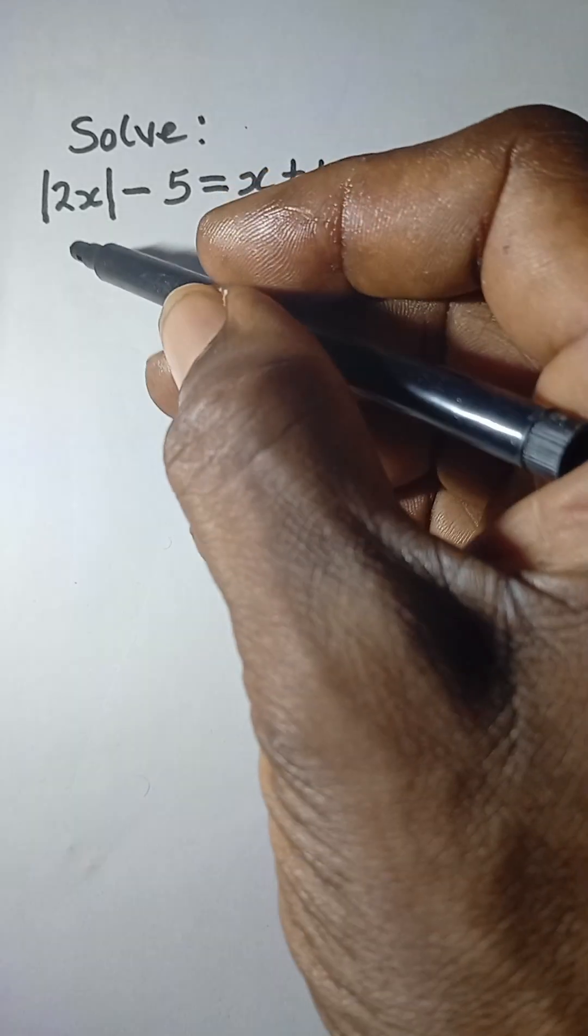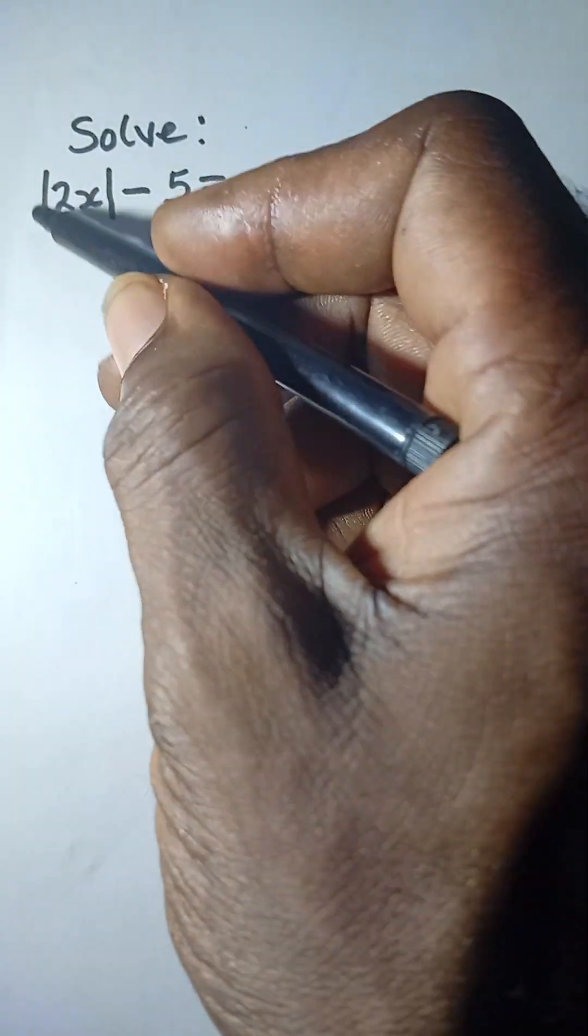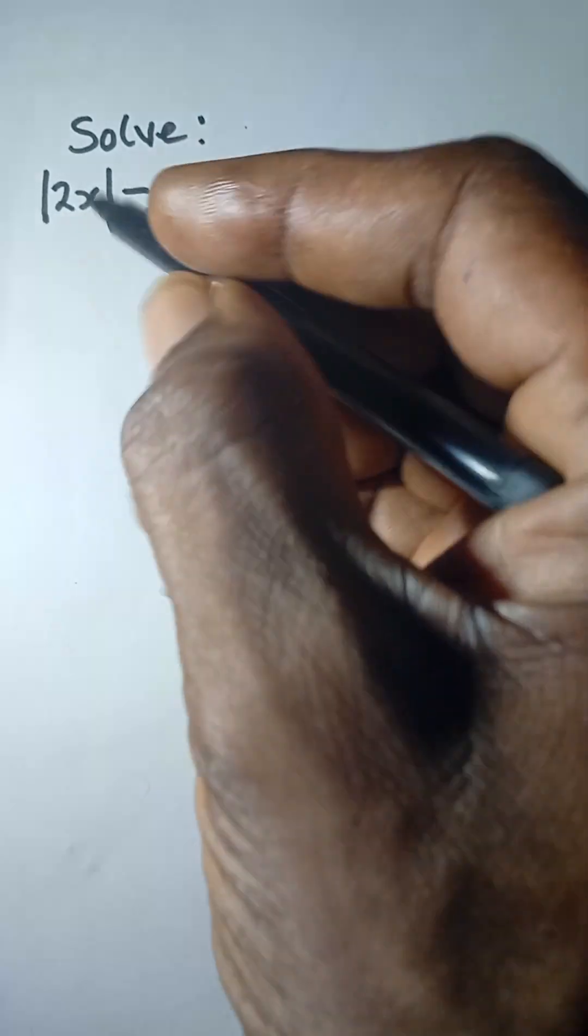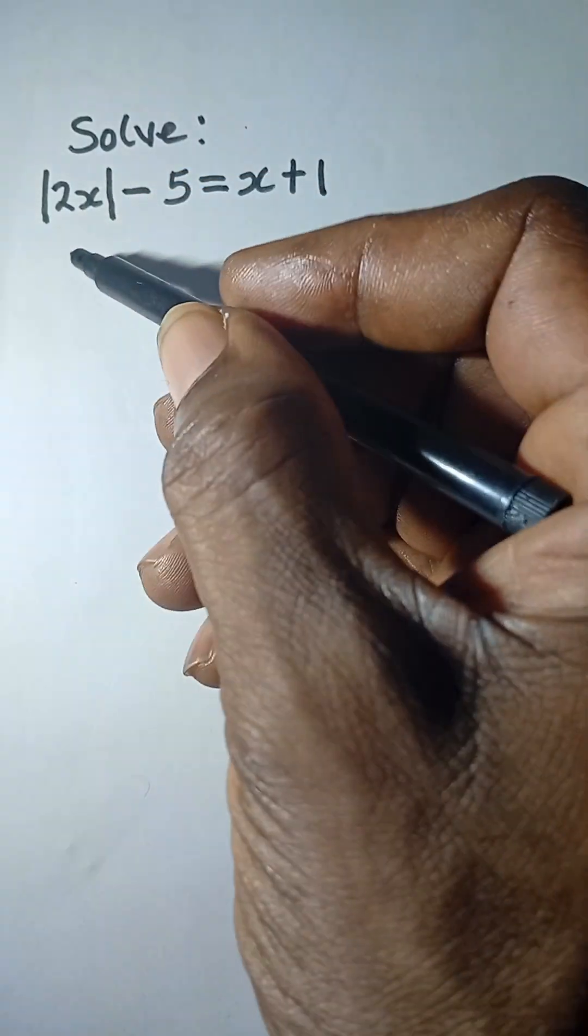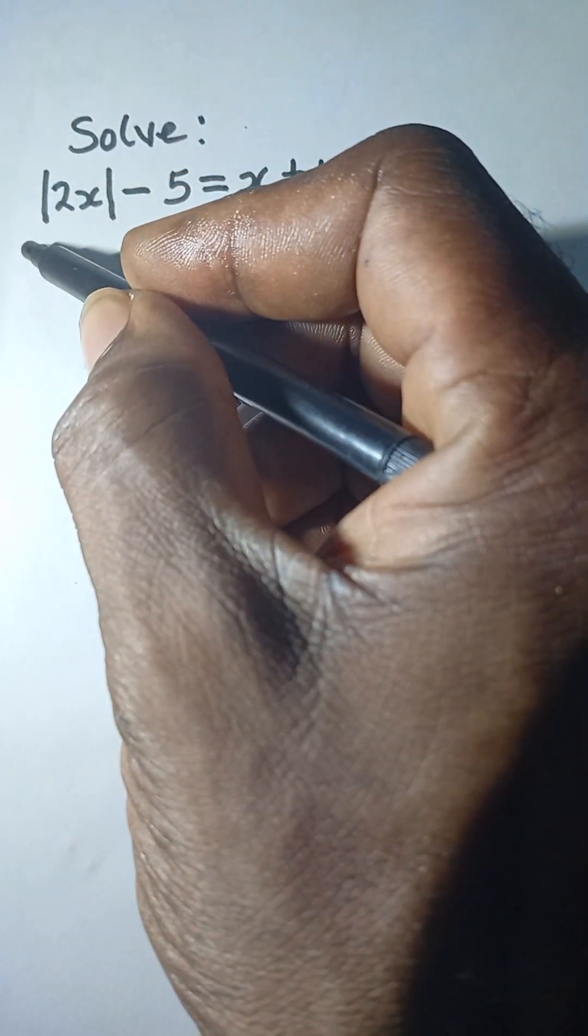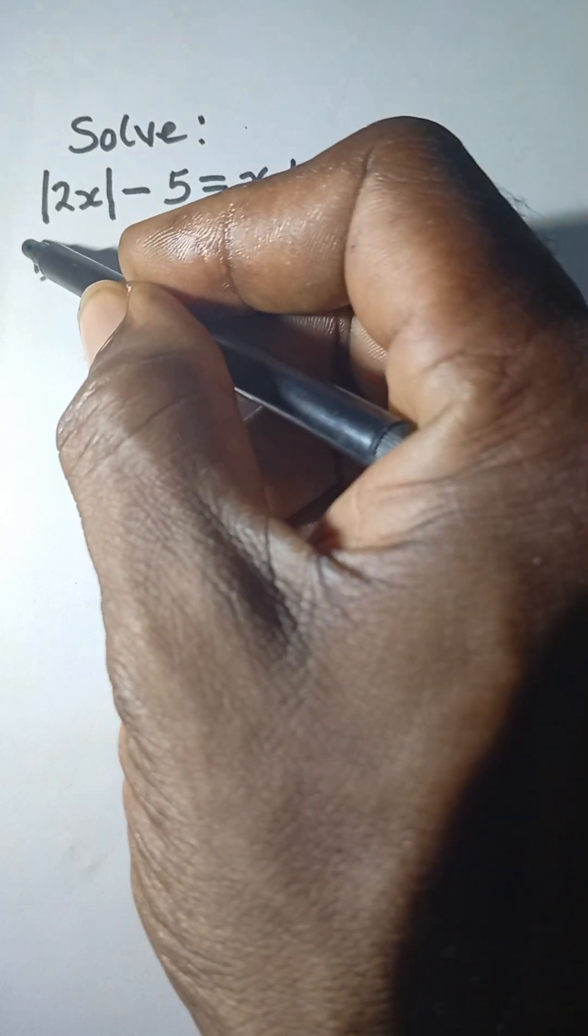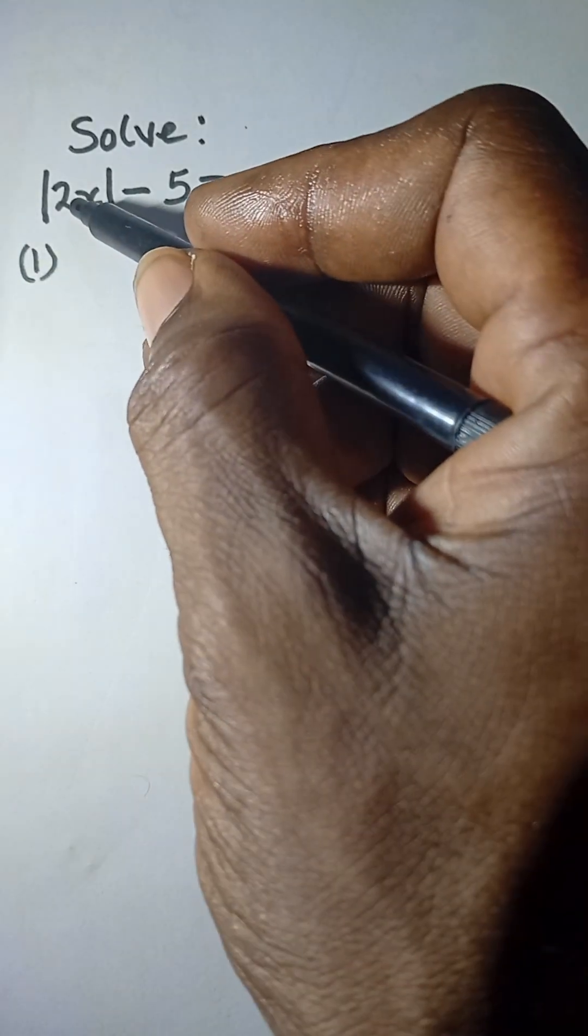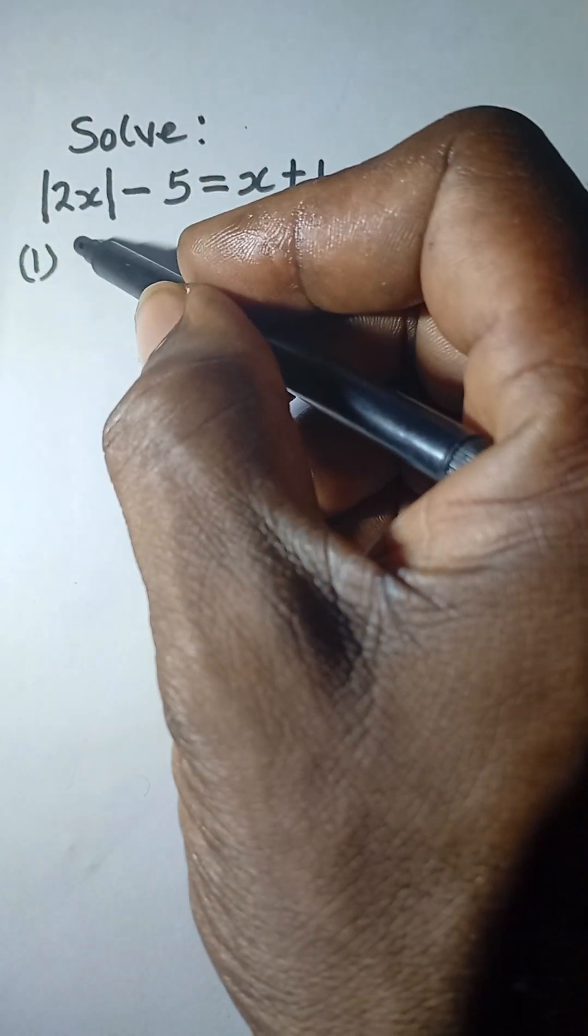Let's look at this modulus equation. Because of the bar here, there are two possible situations for this equation. The first one is that we can simply take this 2x here in the bar